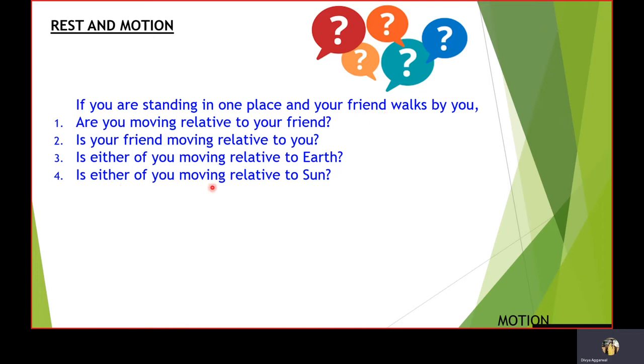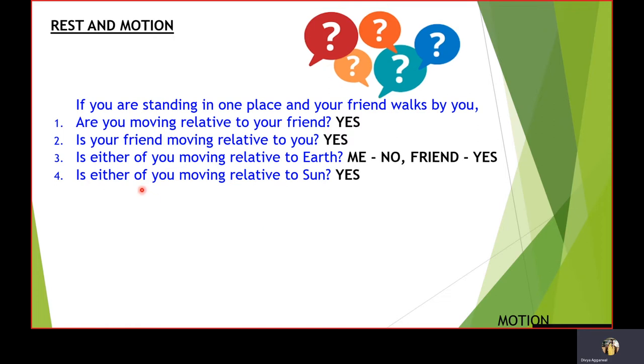Now next, is either of you moving relative to the Sun? So previously, as I have told you that Earth is revolving around the Sun, so each and every object that is on Earth is in motion with respect to the Sun. So yes, both of us are moving relative to the Sun.